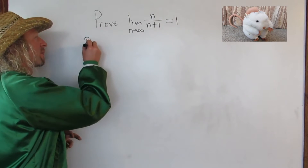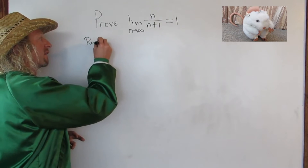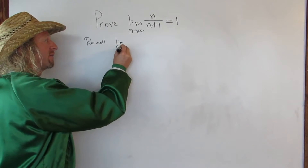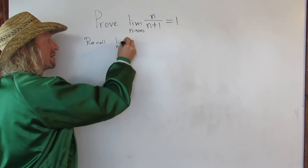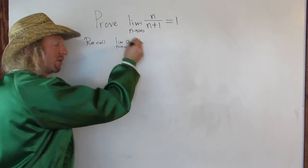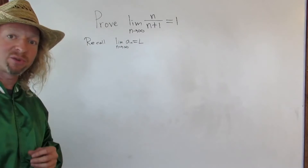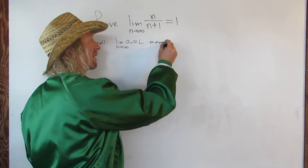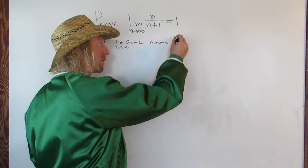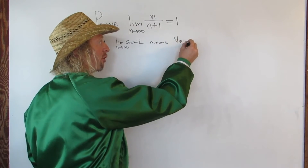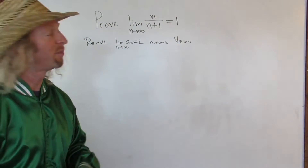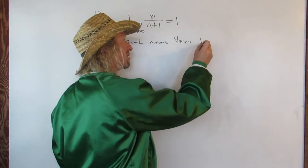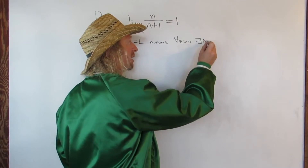Recall that when we take the limit as n approaches infinity of a sub n, and we say that's equal to l, where l is a real number, what does this mean? Well, this means that for every epsilon greater than zero, we can find some natural number — there exists a natural number N.